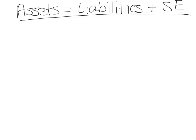Assets are things that the company owns — things like cash, accounts receivable, notes receivable, buildings, land, equipment, and office supplies. Liabilities are things that the company owes, such as accounts payable, notes payable, taxes payable, and unearned revenue.